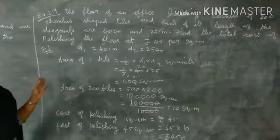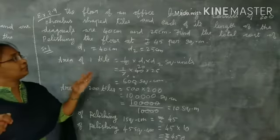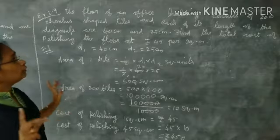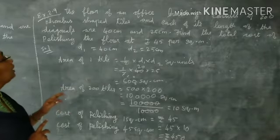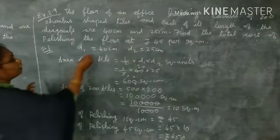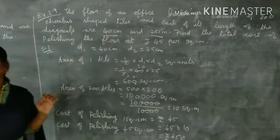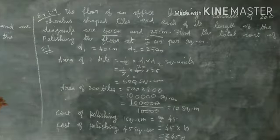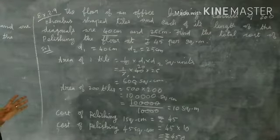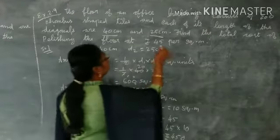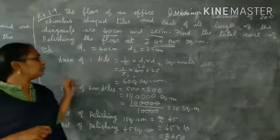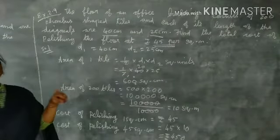Next example 2.9. The floor of an office building consists of 200 rhombus shaped tiles. One floor of an office building has 200 tiles. Each tile has diagonals of length 40 centimeters and 50 centimeters. Two diagonals d1 and d2. Finally, cost of polishing the floor is 45 rupees per square meter.